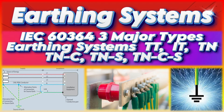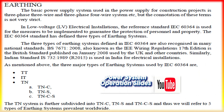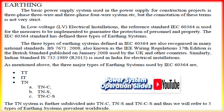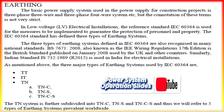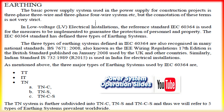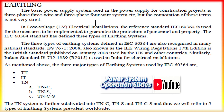The IEC-60364 standard divides the earthing systems into three categories: TT, IT, and TN. IEC develops international standards for all electrical, electronic, and associated technologies and is the leading international organization in its field. IEC-60364 is the apex-level publication that informs the standards for LV electrical installations.